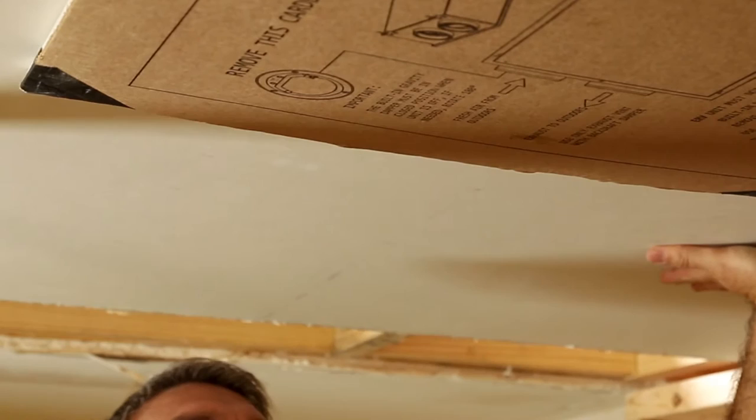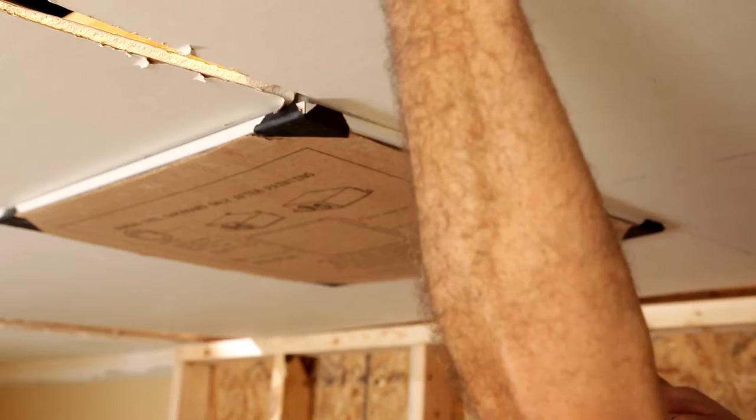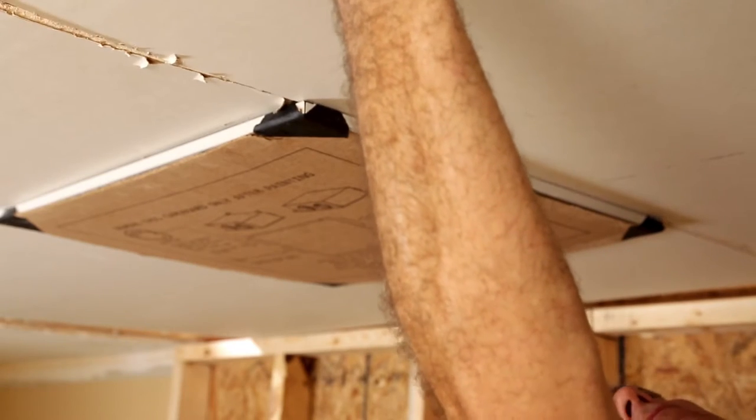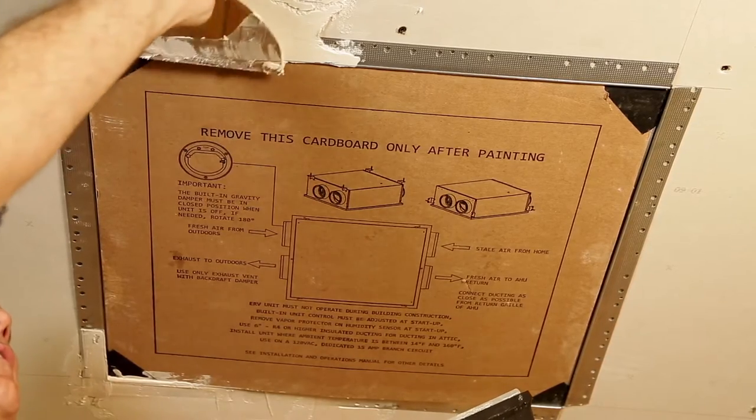When installing in the ceiling, the ERVS-100 can be installed with the unit's cover overlapping the drywall as a flange or with the unit's cover flush with the ceiling material.